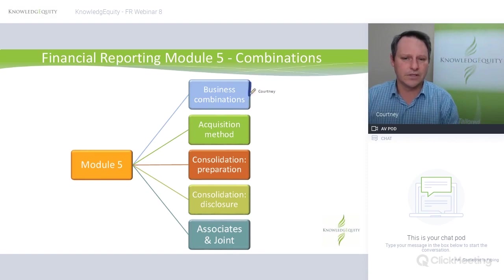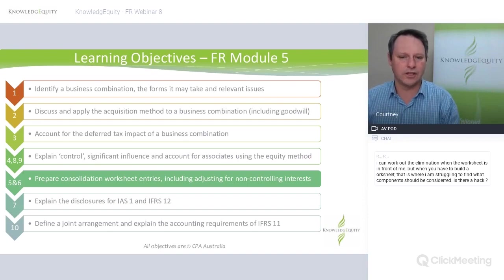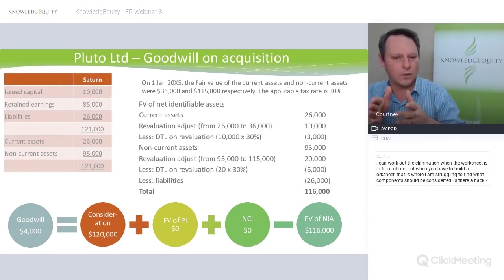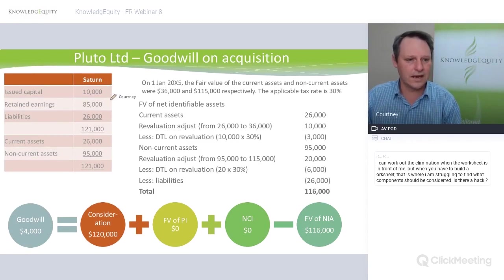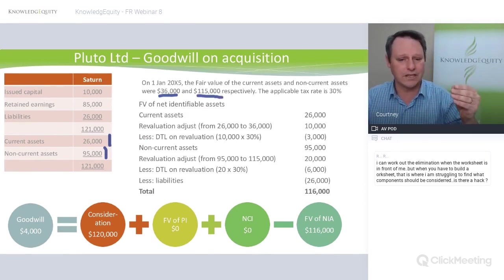Last week we looked at business combinations acquisition, specifically the consolidated worksheet with Pluto Limited. Tonight we'll finish off on that consolidation preparation. Pluto bought Saturn. Saturn's current assets were revalued to $36,000 up from $26,000, and the non-current to $115,000 up from $95,000 — so plus $10,000 and plus $20,000.